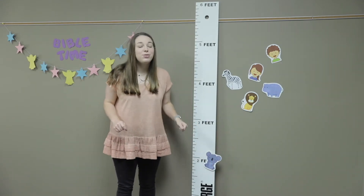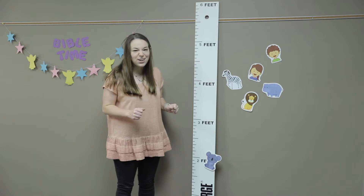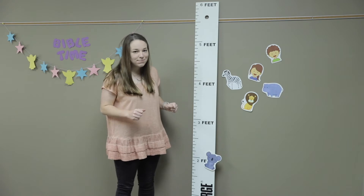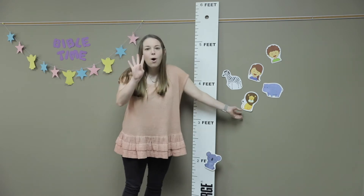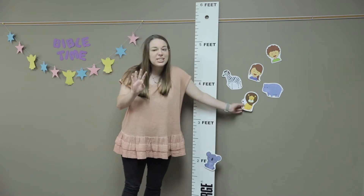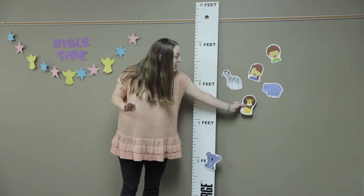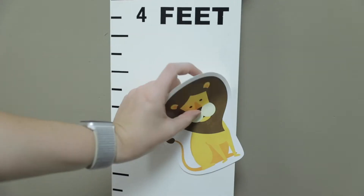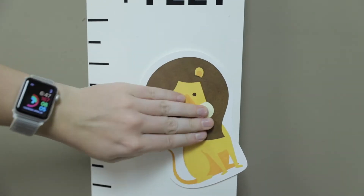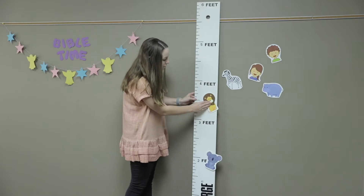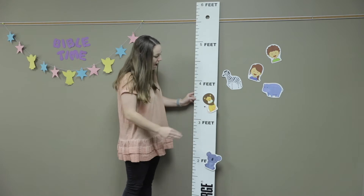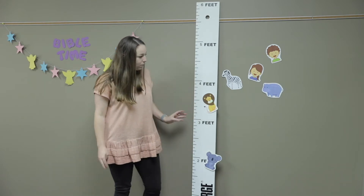Which animal do you think is the next tallest? When a lion is on all fours, he is three and a half feet tall. So we're going to put it right in between the three and the four for three and a half feet tall.